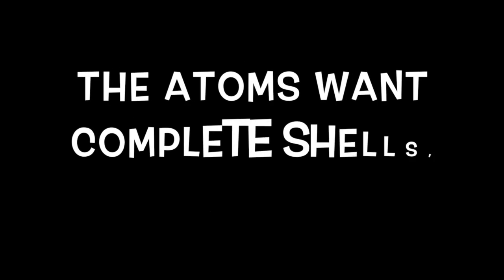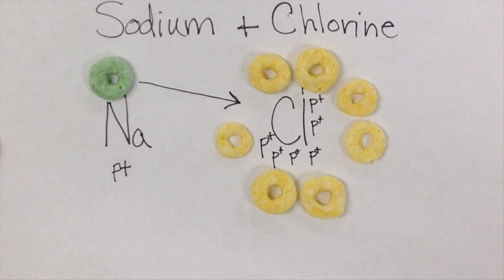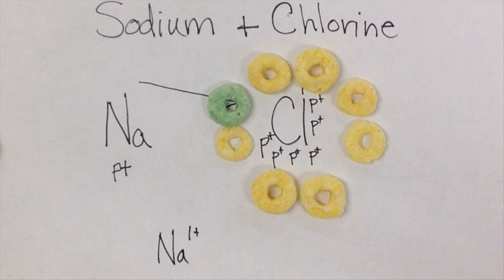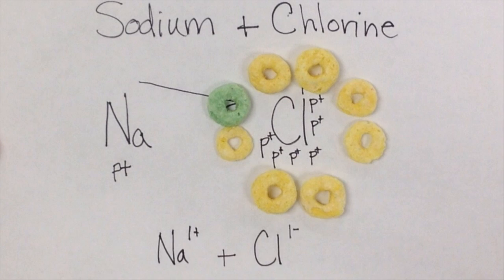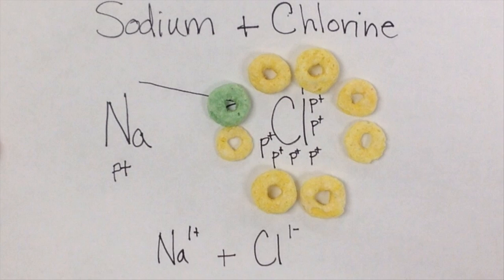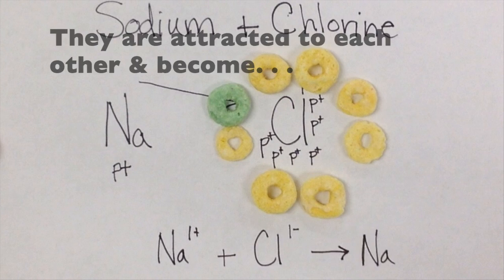Those atoms want complete shells. So the sodium atom gives its electron to chlorine. Sodium becomes a positive ion because now it has an extra proton, while chlorine is a negative ion. It has more electrons than protons, so it's a negative charge. Negative and positive charges are attracted to become table salt.